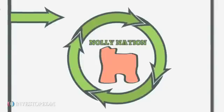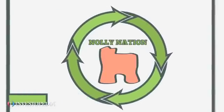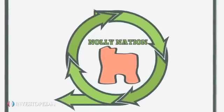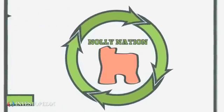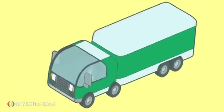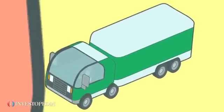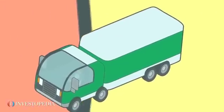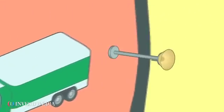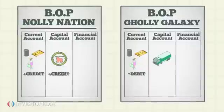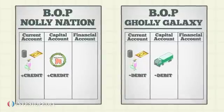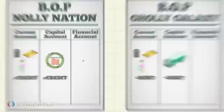The capital account tracks movement of capital going in and out of a country for investment purposes. When a Gollian migrates to Nolly Nation, the items of value he moves into the nation with him represent a credit to Nolly's account and a debit to Golly's BOP account.